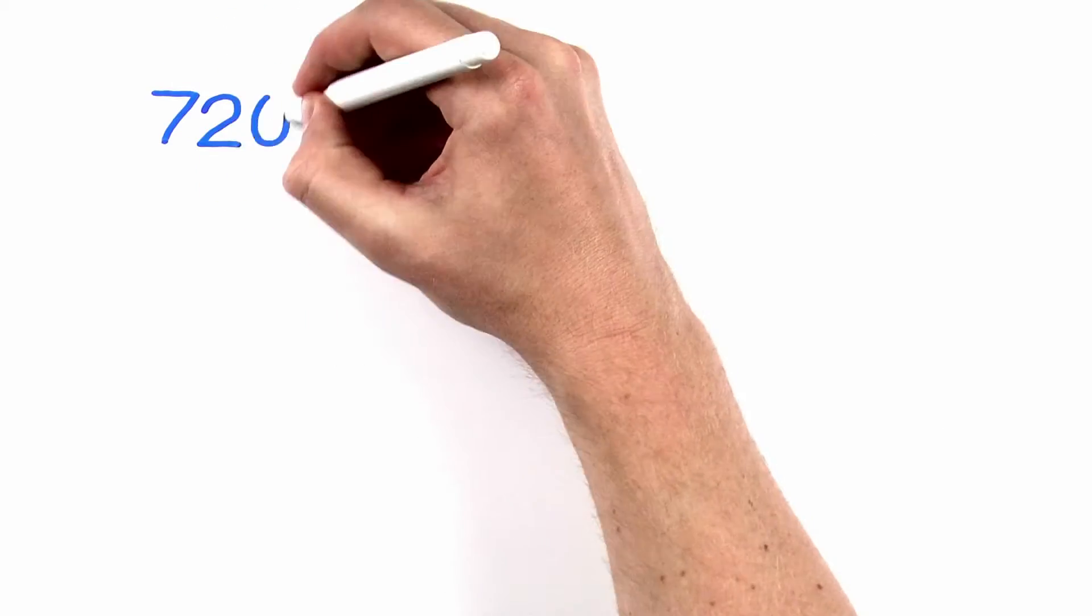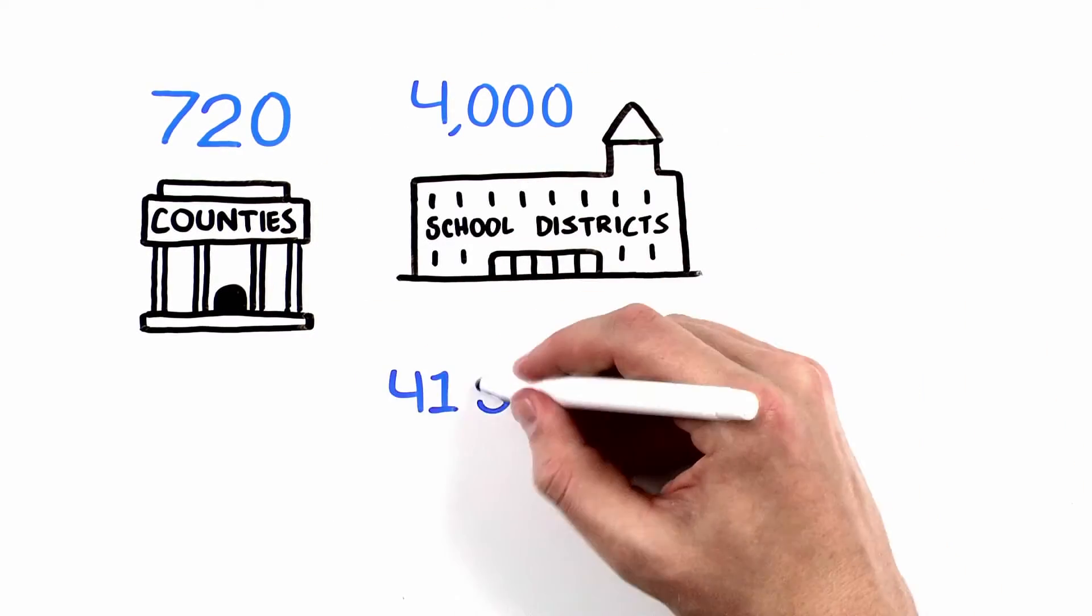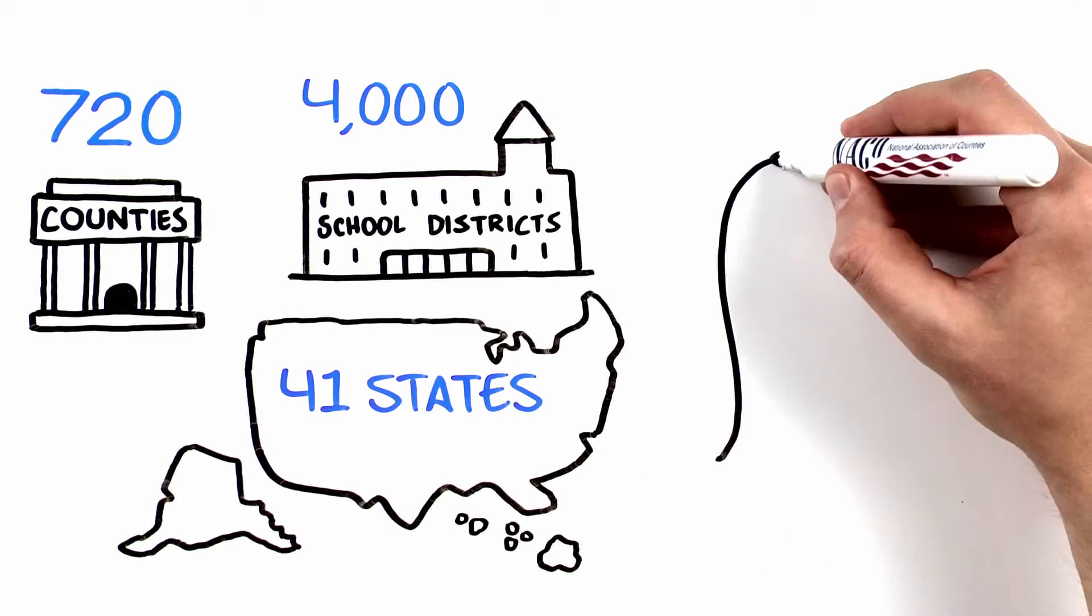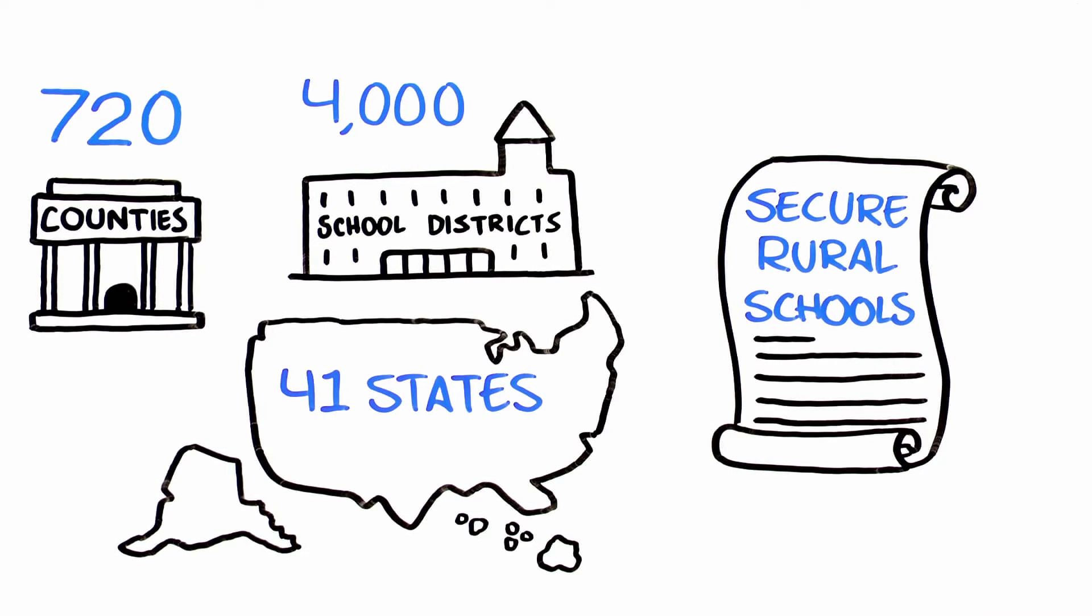Additionally, more than 720 counties and 4,000 school districts are impacted by another crucial program known as Secure Rural Schools, or SRS.